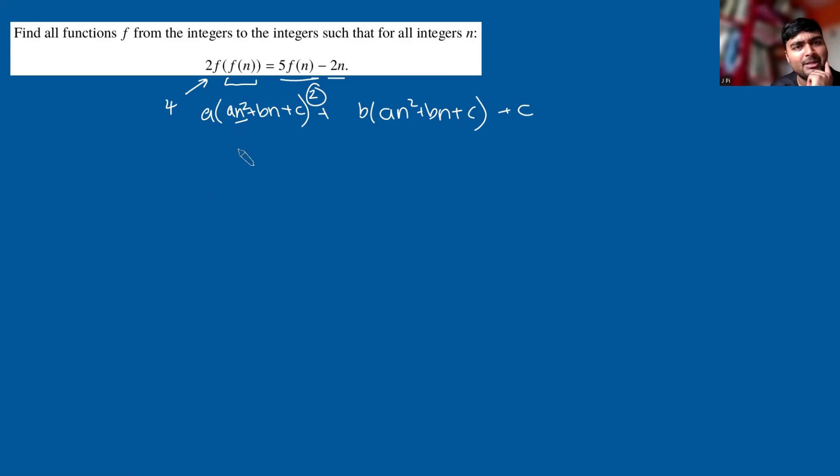So that means that if f was a polynomial, it has to be either a constant or a linear function. And it's also pretty clear it can't be constant, because if f was constant, the left-hand side would just be 2c, the right-hand side would be 5c - 2n. This is clearly not going to be true for all values of n. So that means that if there's any hope of f being a polynomial, it has to be linear. Let's see if that could be the case.